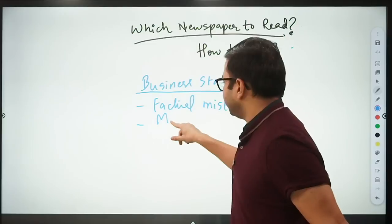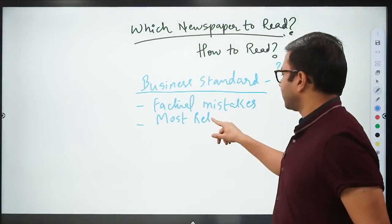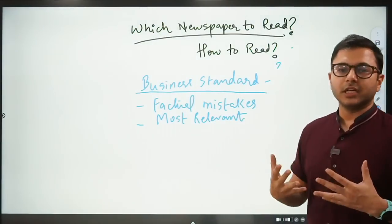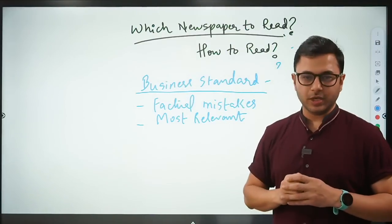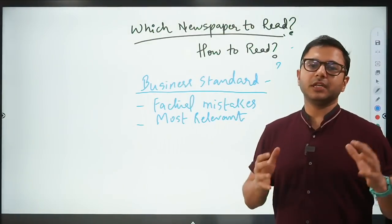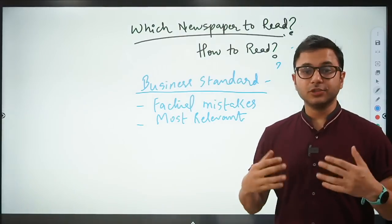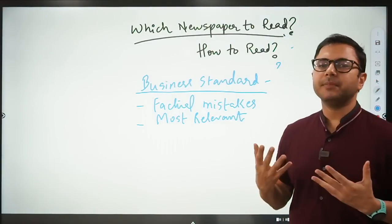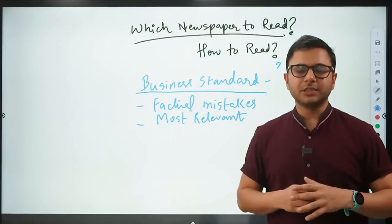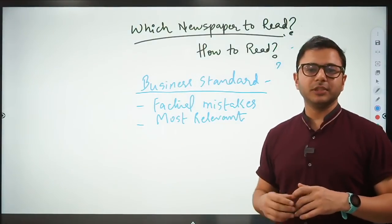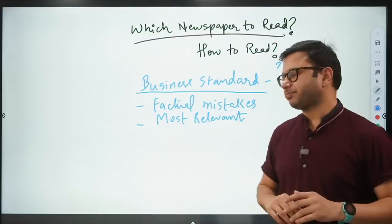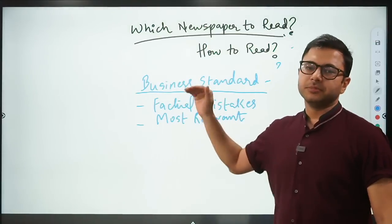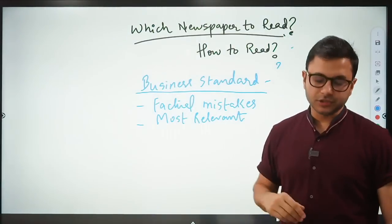Some newspapers in comparison like LiveMint don't make these mistakes. Most relevant. Because we have seen in the past three to four years that whatever questions come from current affairs, either they are picked up from PIB, or many current affairs statements have been picked up from Business Standard as well. That automatically gives us the impression that the examiner is reading Business Standard regularly.